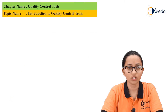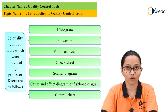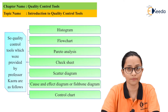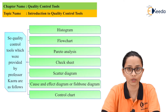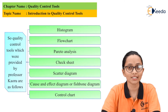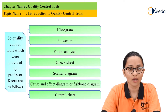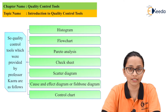So, the quality control tools provided by Prof. Kaoru Ishikawa are as follows: the first one is Histogram, the second is Flow Chart, the third is Pareto Analysis, the fourth is Checksheet, the fifth is Scatter Diagram, the sixth is Cause and Effect Diagram or Fishbone Diagram, and the seventh is Control Chart. We will study all these quality tools in detail in the next video.